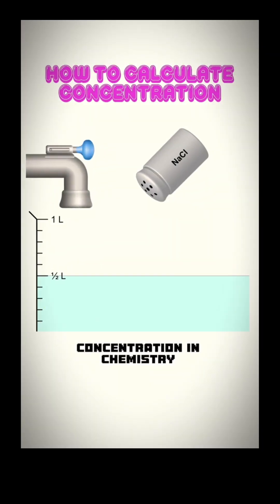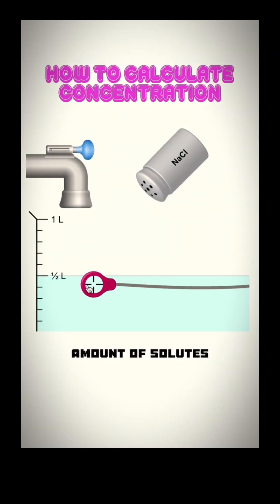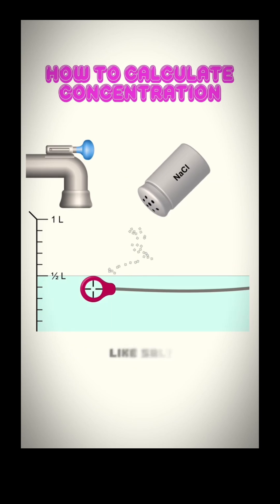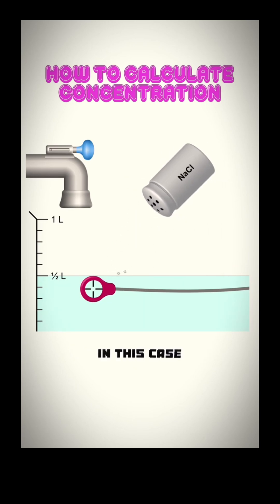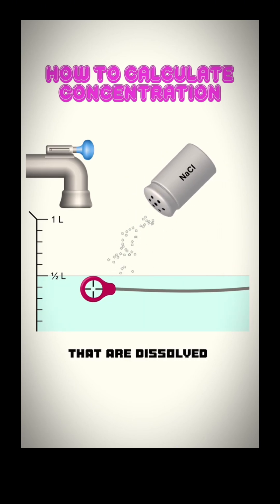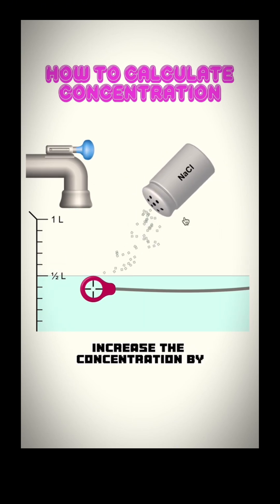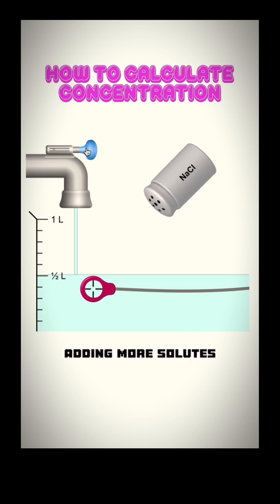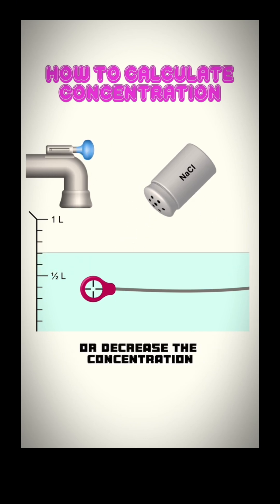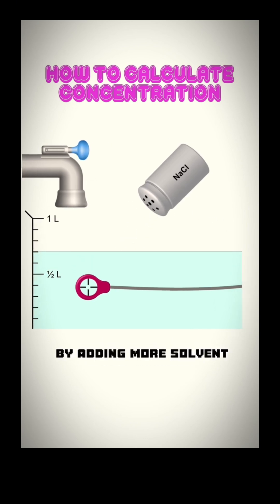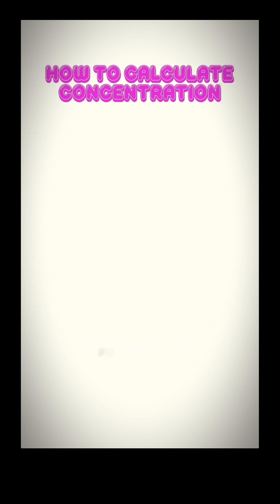Concentration in chemistry stands for the amount of solutes — like salts in this case — that are dissolved in units of volume. You can always increase the concentration by adding more solutes, or decrease the concentration by adding more solvent.